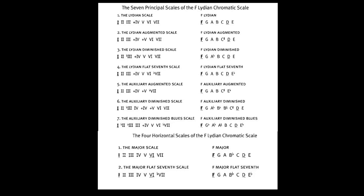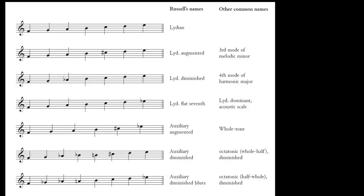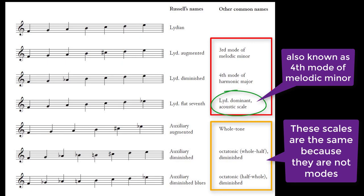These 11 scales are further divided into seven principal scales and four horizontal scales. The seven principal scales are derived from the Lydian Chromatic scale and given what Russell calls their ingoing to outgoing order in regard to the F Lydian tonic — ingoing and outgoing may be read as consonant and dissonant respectively. The principal scales are probably more familiar under different names, but remember that vertical and horizontal scales are not the same in Russell's world.